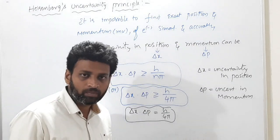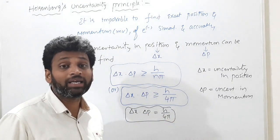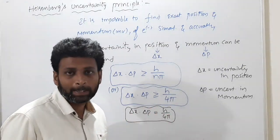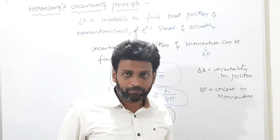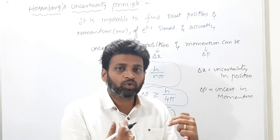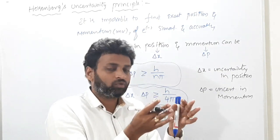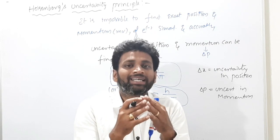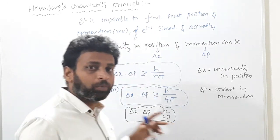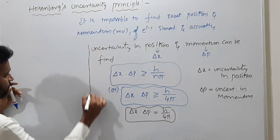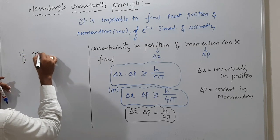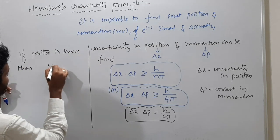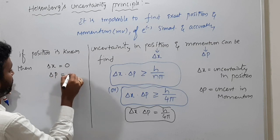What is the meaning of this equation? If position is known, then there is no uncertainty in position, so delta X becomes 0. If delta X is 0, then delta P will become infinity, because delta P = h/(4π × delta X), and dividing by zero gives infinity. So if position is known, delta X = 0 and delta P = infinity.